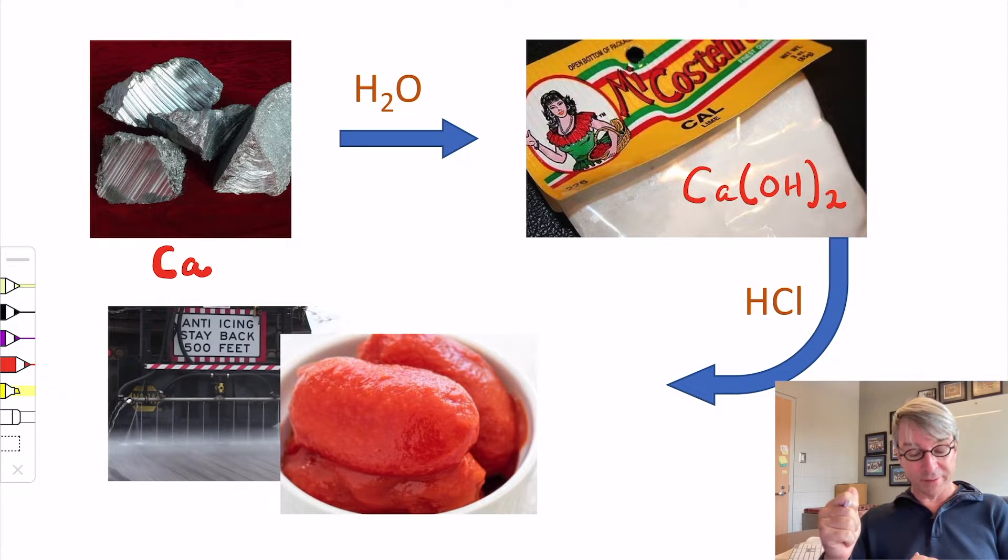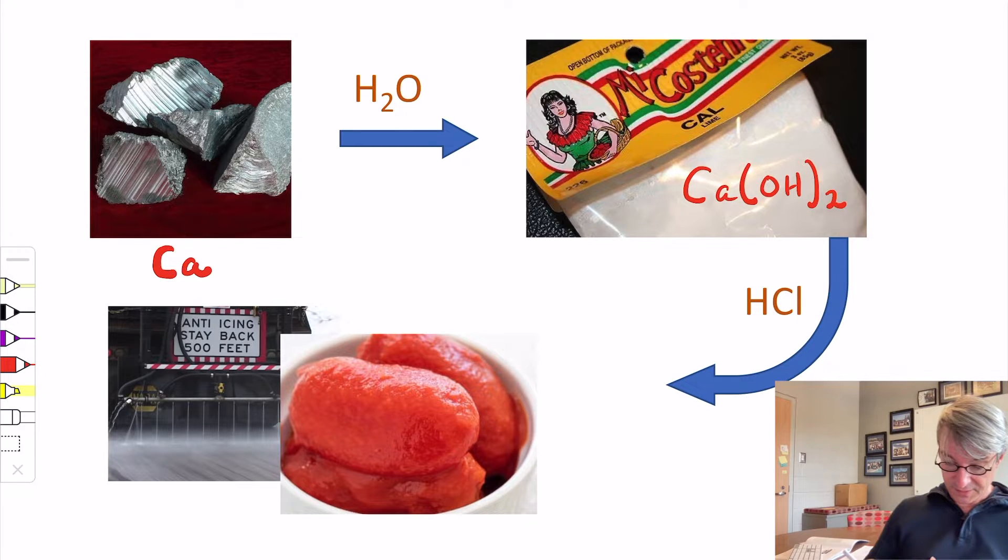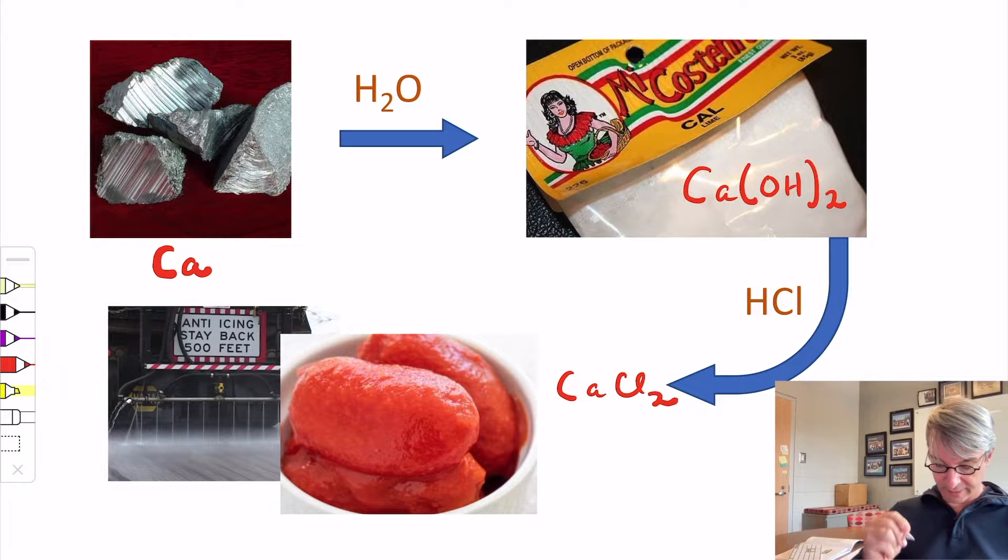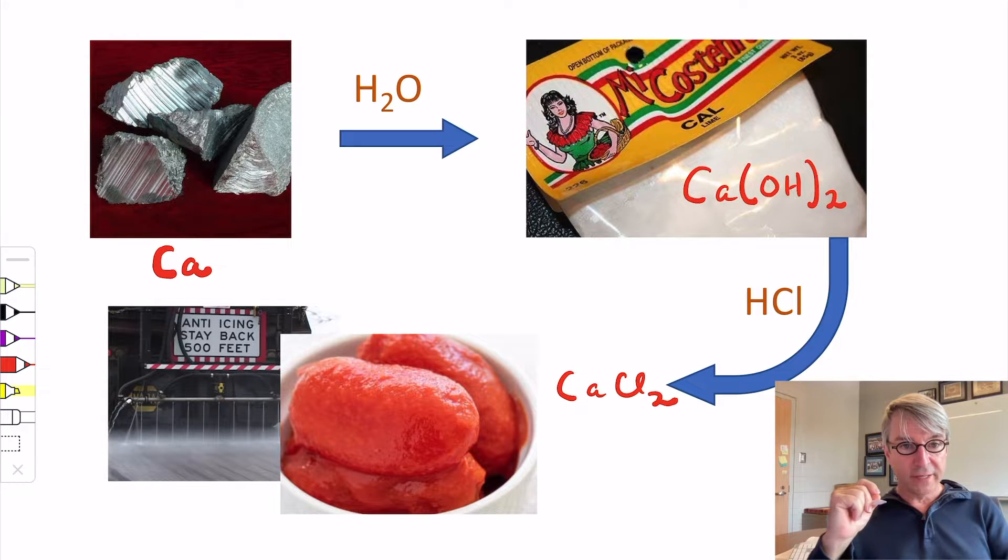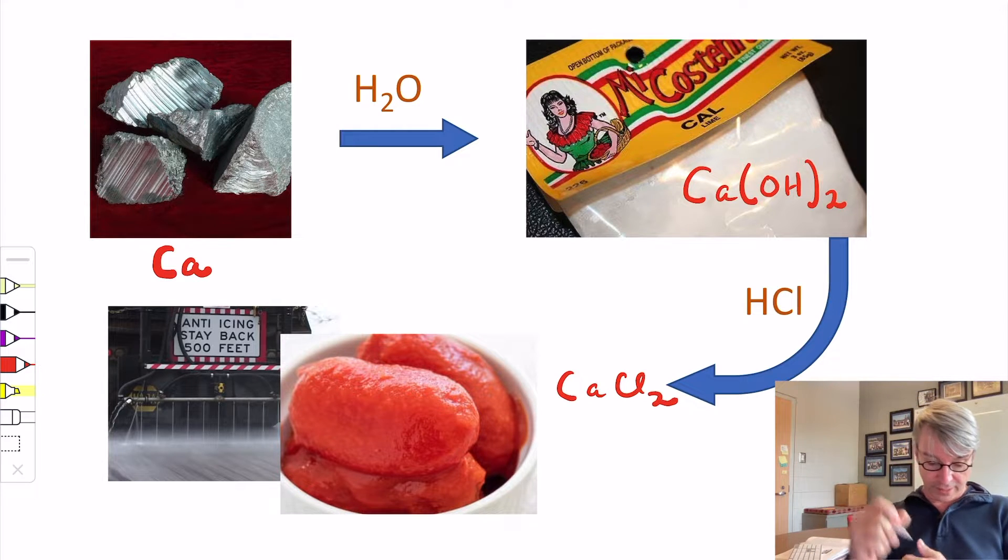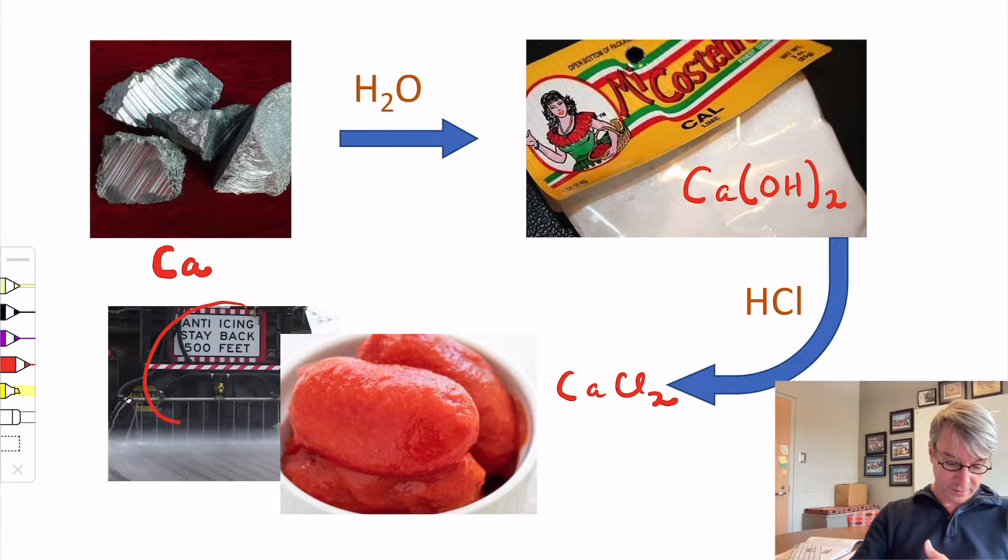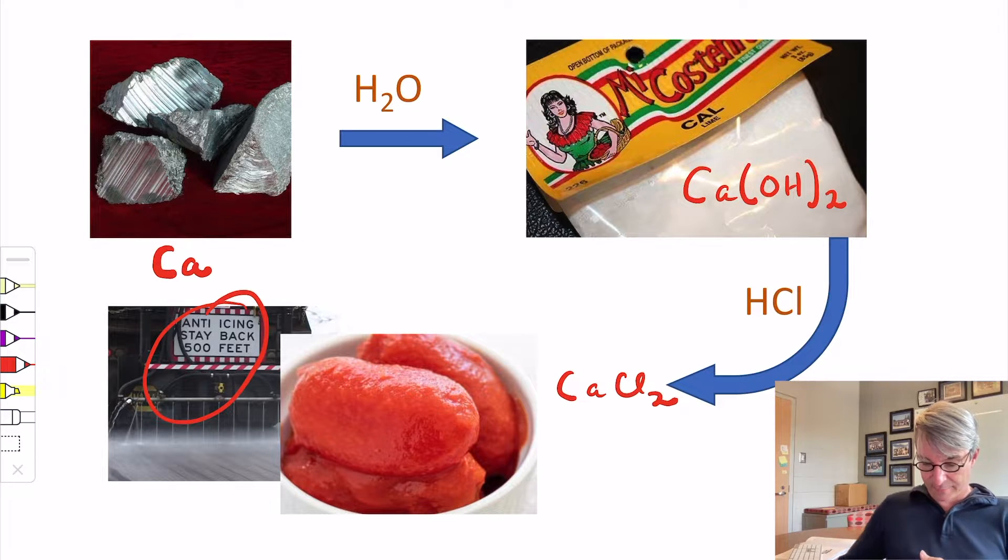You're going to make calcium hydroxide today and then react it with hydrochloric acid. This is going to give you calcium chloride. Calcium chloride has food uses currently. Look on a can of tomatoes and you'll find out that it includes calcium chloride. This keeps the tomatoes firm. Most of the calcium chloride in the world that is produced, however, goes into anti-icing applications.